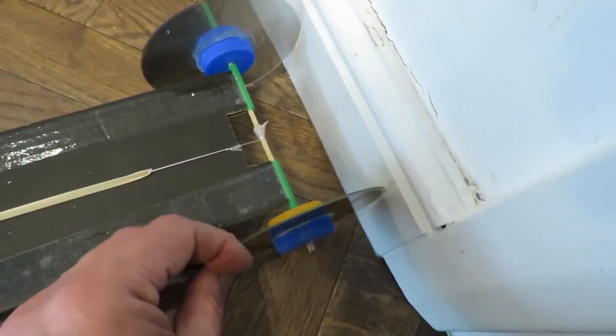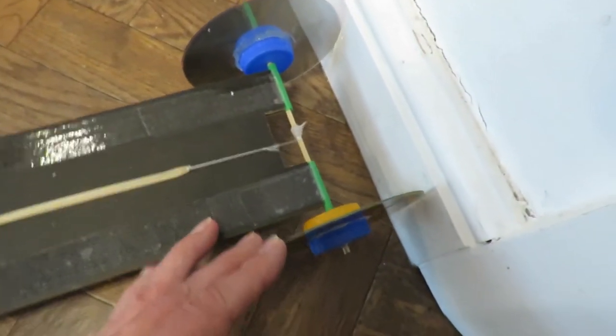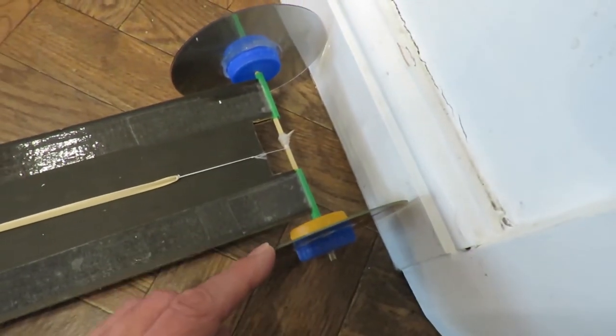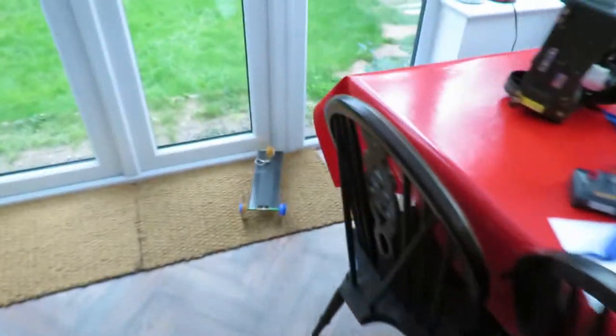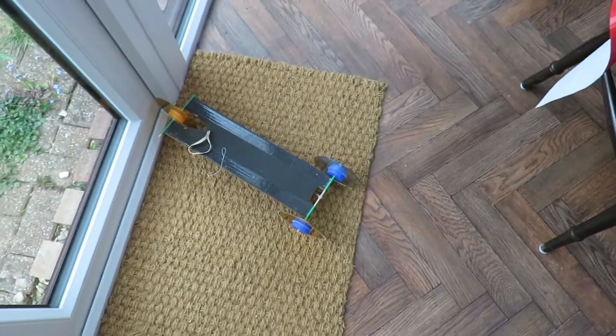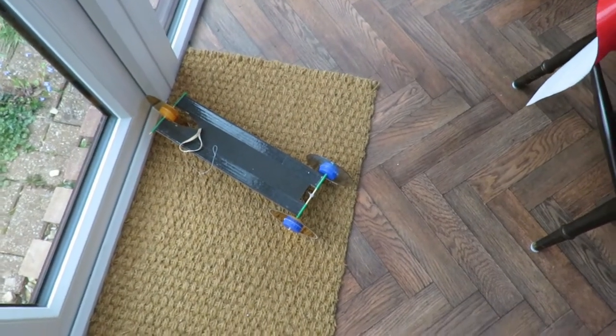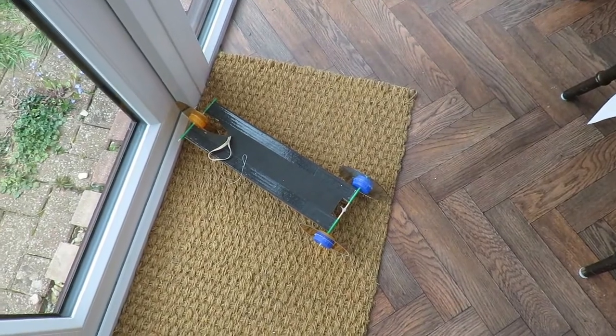So if we just position that against the end of my kitchen and we'll see if it goes up the kitchen. Yeah that works fine. Kitchen's five meters and then my conservatory's about another three, so that was eight meters quite happily.